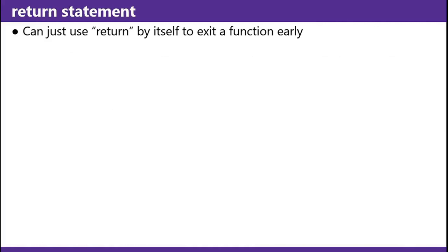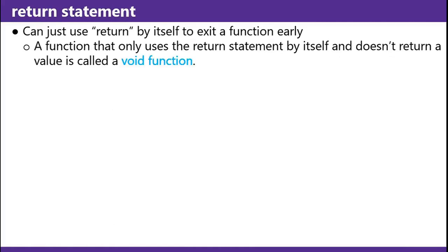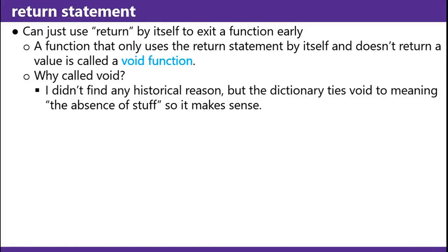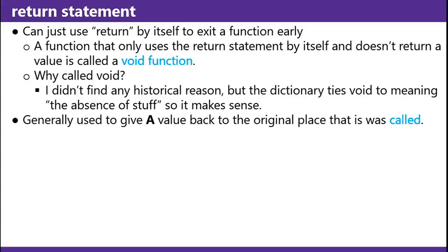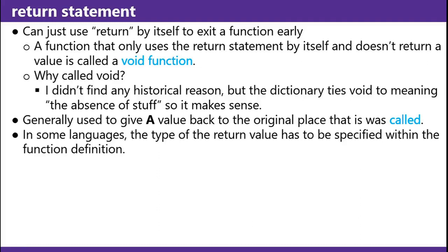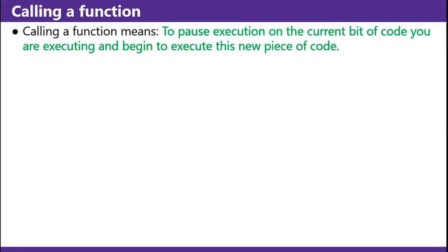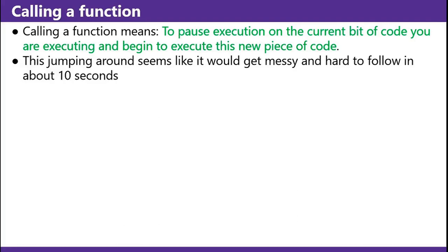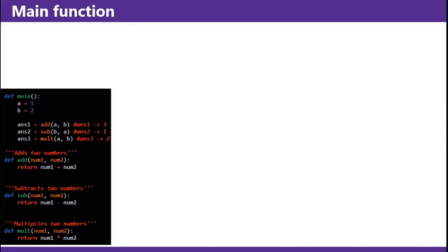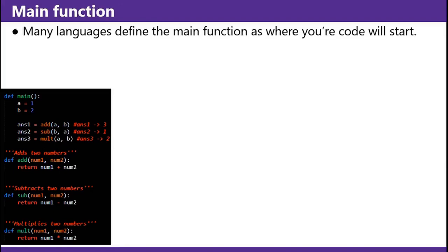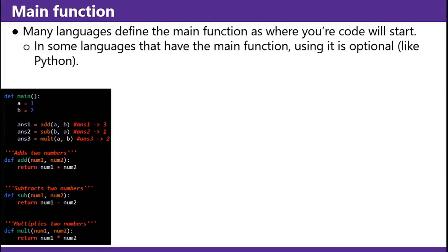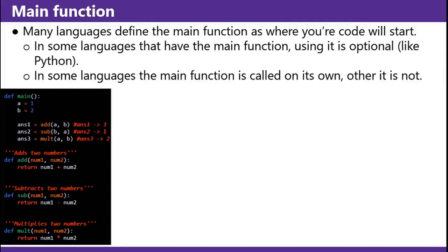Return statement: you can use return by itself to exit a function early. A function that only uses the return statement by itself and doesn't return a value is called a void function — the dictionary ties void to meaning the absence of stuff. Generally used to give back more than one value from a function to the original place it was called. In some languages, the type of the return value has to be specified within the function definition. Calling a function means to pause execution on the current bit of code you are executing and begin to execute this new piece of code. Main function: many languages define the main function as where your code will start. In some languages, using the main function is optional like Python. In this example, you define two numbers 1 and 2, call the add function — you go into add, add 1 and 2, it gives back 3, so answer1 is 3. Then answer2 calls subtraction with 2 and 1 — you go to the subtraction function, subtract, return 1. Answer3 calls multiplication with 2 and 1, you multiply, return 2.